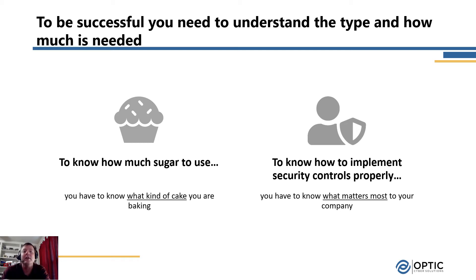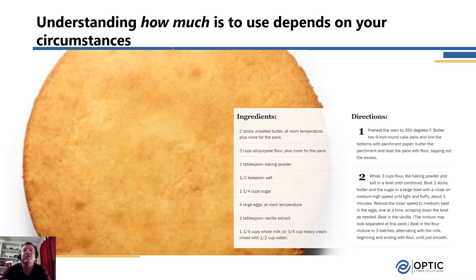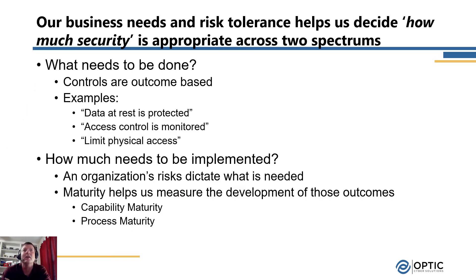Cybersecurity works the exact same way. If you're told these are all the components of a cybersecurity program, you still need to understand what's important to you and what your risk thresholds are, so you know how much cybersecurity is appropriate. Just like baking a cake — having a recipe makes it easy. You agree on the type of cake, how many people you're feeding, and exactly how much of each ingredient you need. We can use cyber maturity the same way to understand how much a cybersecurity program needs to be implemented.